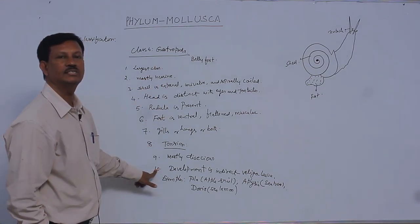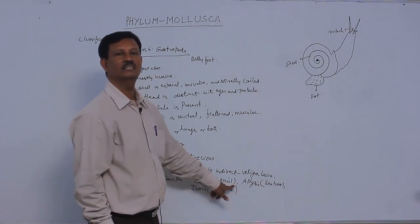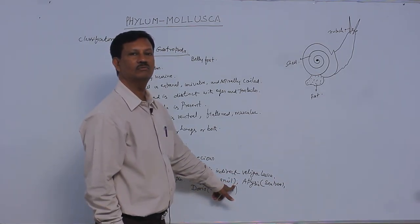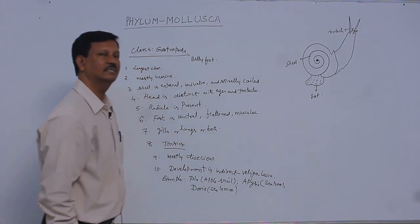These are mostly dioecious animals—male and female are separate. Development is indirect and includes a larval form. The veliger larva is present in development, hence it is known as indirect development.